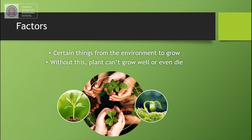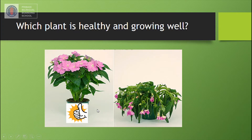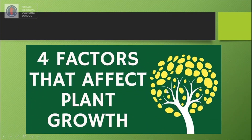Now look at the picture. Which plant is healthy and growing well — is it the left one or the right one? Yes, correct! It's the left one. This plant looks healthy and growing well. It has a strong stem and fresh leaves, compared with the other plant. Now we are going to learn about the four factors that affect plant growth.